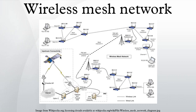The mesh clients are often laptops, cell phones and other wireless devices, while the mesh routers forward traffic to and from the gateways which may, but need not, connect to the Internet. The coverage area of the radio nodes working as a single network is sometimes called a mesh cloud. Access to this mesh cloud is dependent on the radio nodes working in harmony with each other to create a radio network.